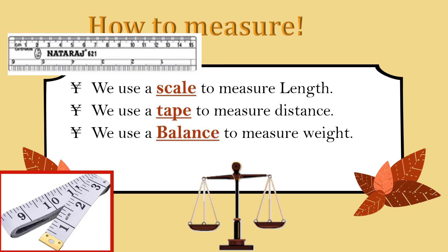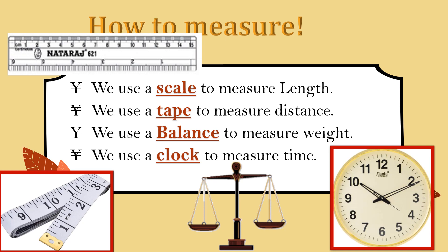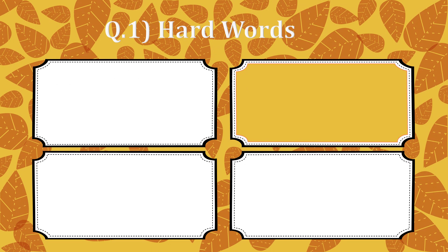Whenever our mother takes vegetables, the vegetable seller uses the balance to weight the vegetables. And another electric balance is also used to measure our weight. We use a clock to measure the time. To measure the time means to see the time we use a clock.